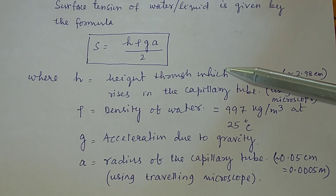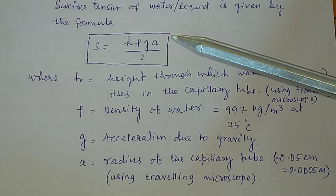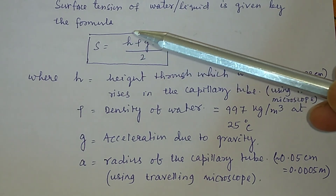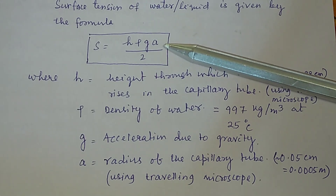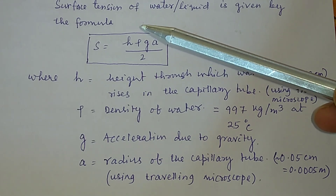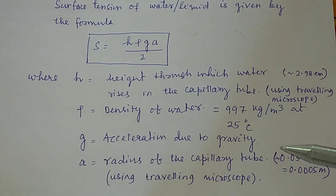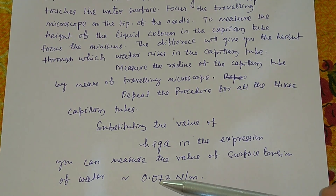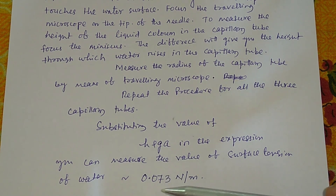In this experiment, I have taken three capillary tubes. You find out the surface tension of water using all three capillary tubes with this formula, and you take the mean of the three to find out the resultant surface tension of water. The surface tension of water is basically of the order of 0.073 Newton per meter. This would be your answer.